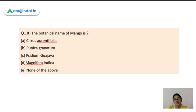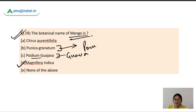The last question is the botanical name of mango is what? The botanical name of mango is Mangifera indica. Then Psidium guajava is the botanical name of guava. Punica granatum is the botanical name of pomegranate. And Citrus aurantifolia is nothing but your lime.